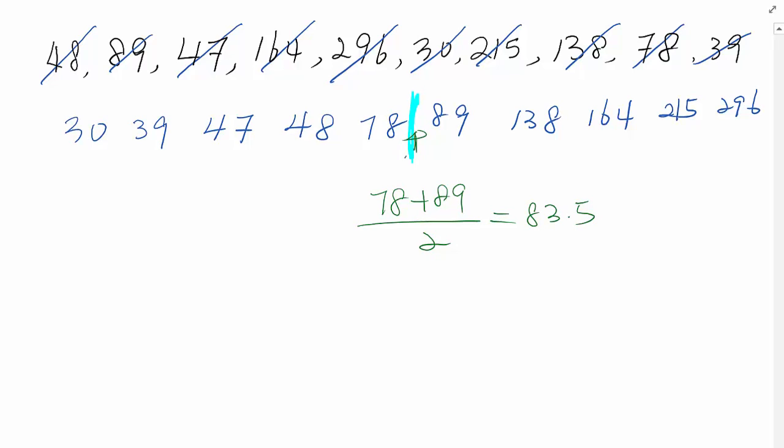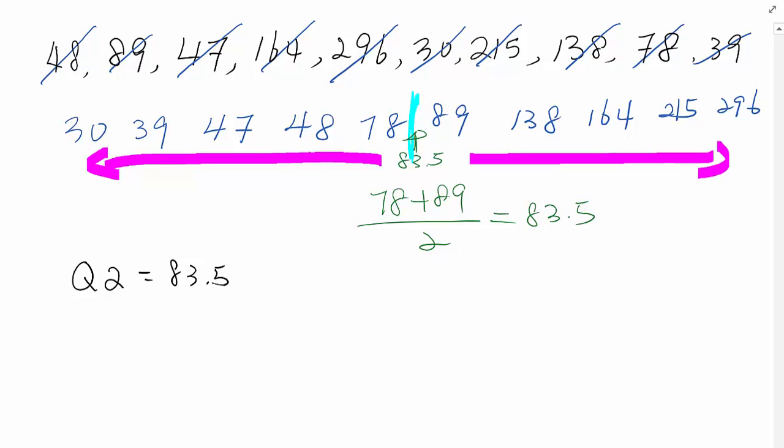So the imaginary median is 83.5. Now divide into two different data sets: the first data set and second data set. I'm going to write Q2, which is median, equal to 83.5. Now you want to find the median for the first set and second set. The median of the first data we call quartile 1, Q1. As you see, 1, 2, 3, 4, 5, the median value is 47. And the second set median will be quartile 3, Q3, which is 164.